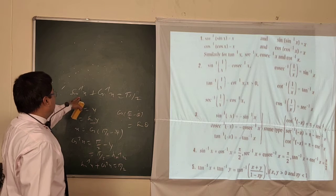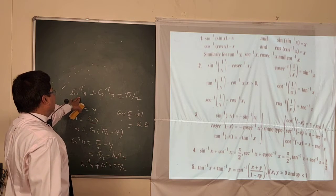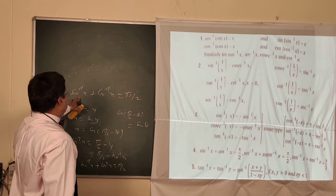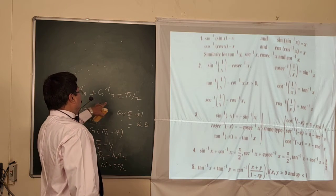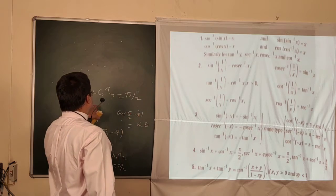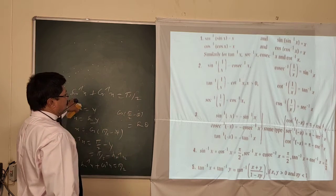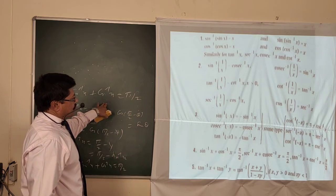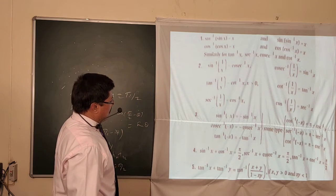You can prove other formulas similarly: tan⁻¹x + cot⁻¹x = π/2, and sec⁻¹x + cosec⁻¹x = π/2.